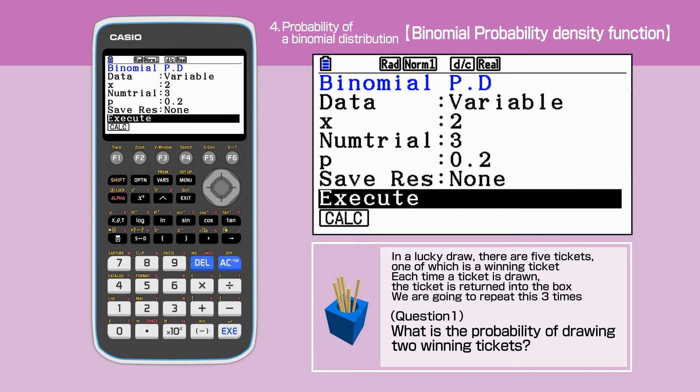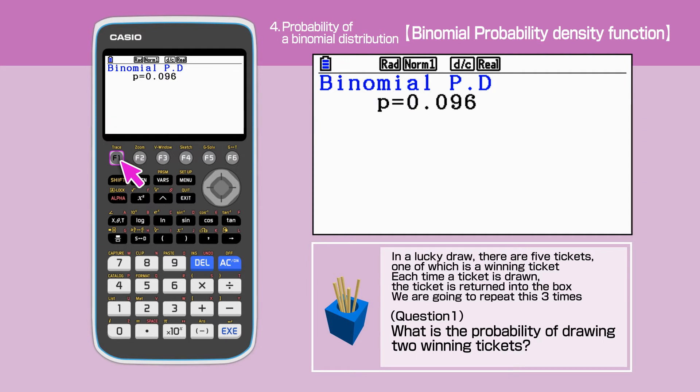Move the cursor to select execute, then press F1 to find the answer. You have successfully reached the solution P equals 0.096.